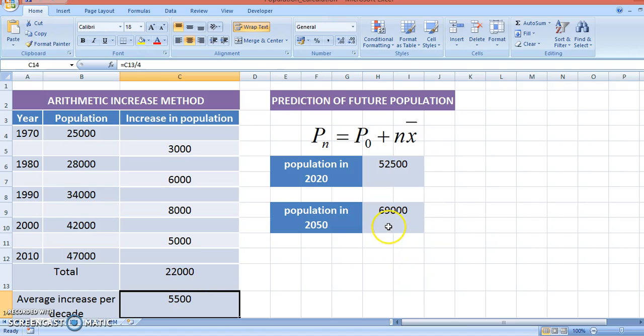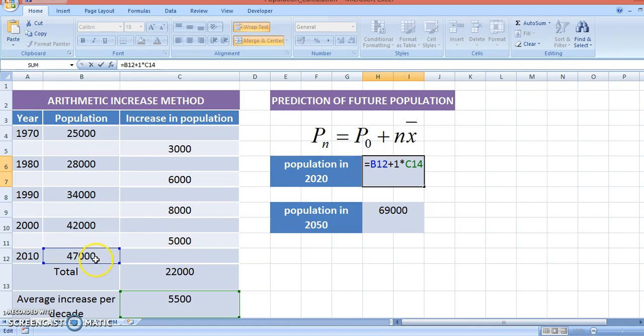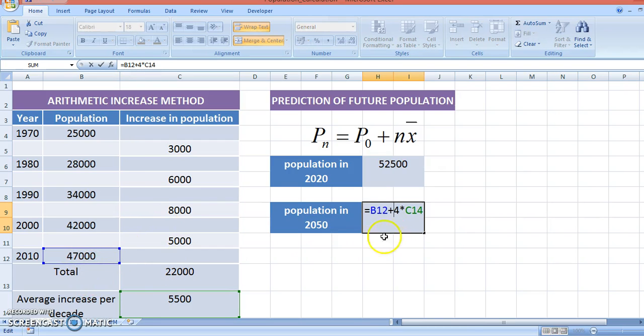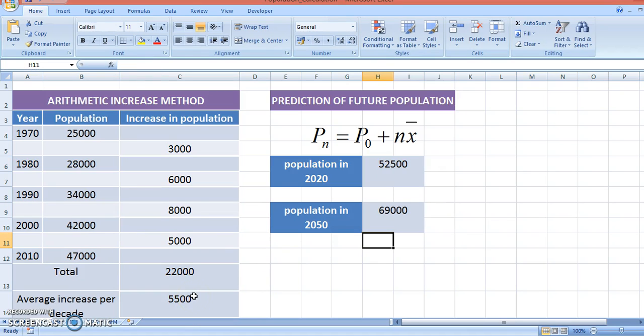With this data, we can calculate or predict the future population. Suppose we want to know the population in 2020 at the same place. We can use this equation: Pn = P0 + nx̄. It forms the base population plus the next decade times 5,500, giving us the answer of 52,000. To know the population of 2050, we start from 2010 plus 4 times the mean, since 4 decades past. This is like a linear series calculation.